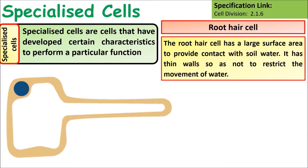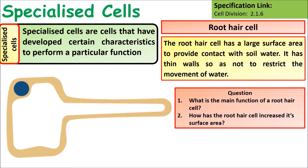Root hair cells cover roots and have a large surface area, thereby increasing the rate of osmosis so water can enter the roots. Think about the main function of the root hair cell and how root hair cells increase surface area.